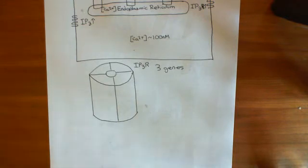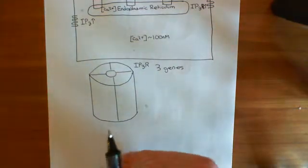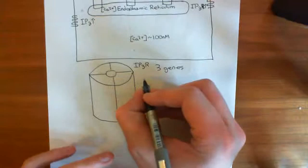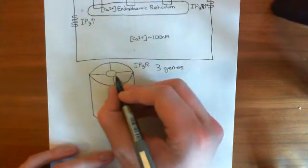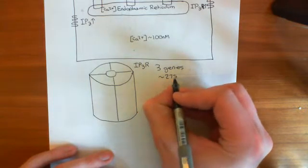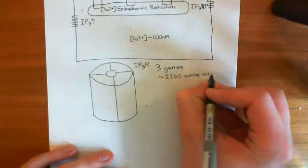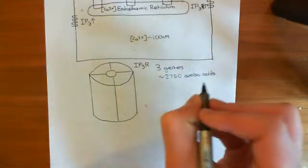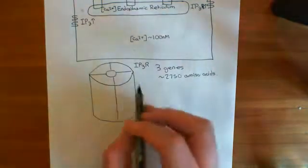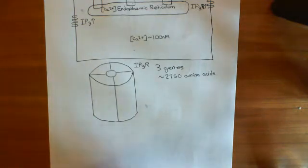As a little aside, the subunits that make up the IP3 receptor are massive — usually around 2,750 amino acids in length. Now, IP3 does not — repeat does not — cause these receptors to open. That is a big misunderstanding.